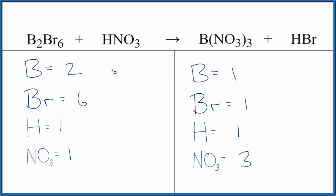Let's start by putting a two in front of the boron nitrate. We have one times two, that'll balance the borons, and then we have the three nitrates times two. Three times two gives us six of those.